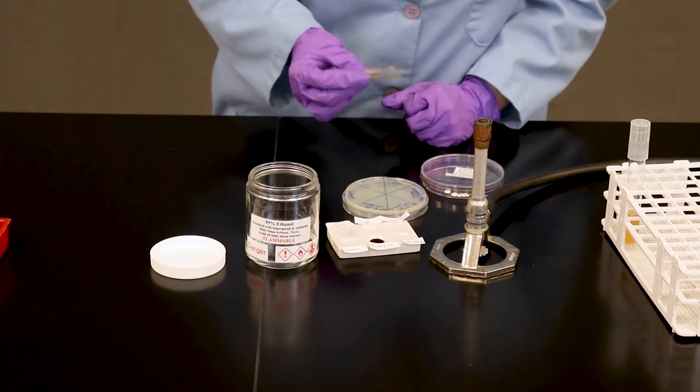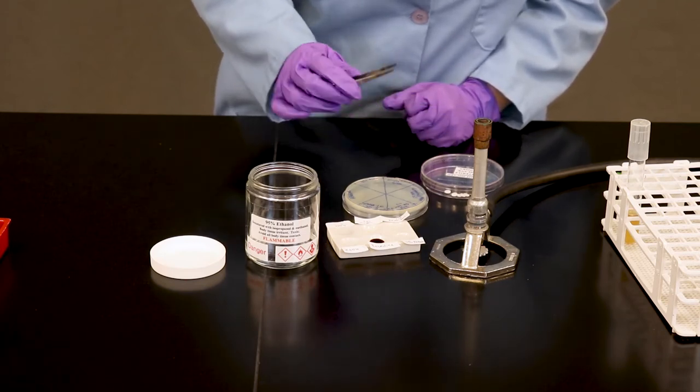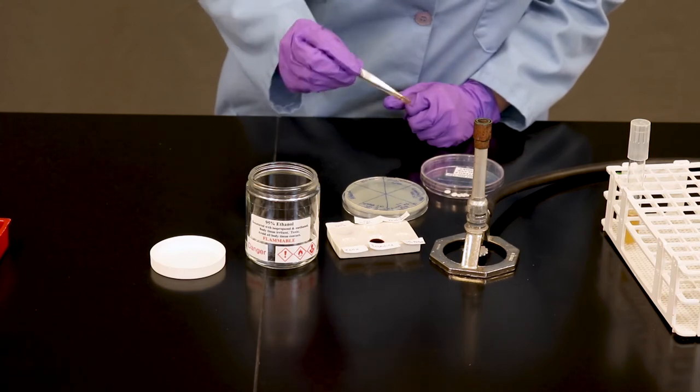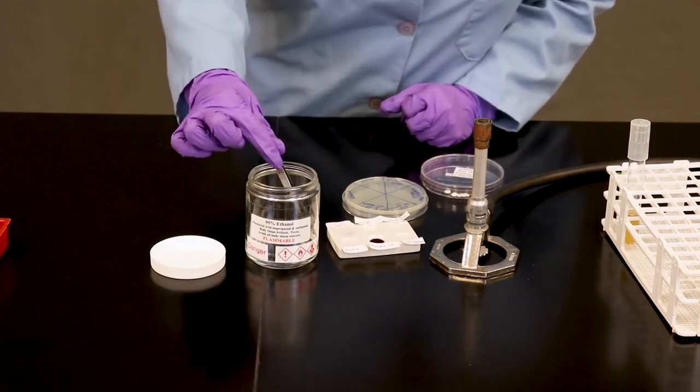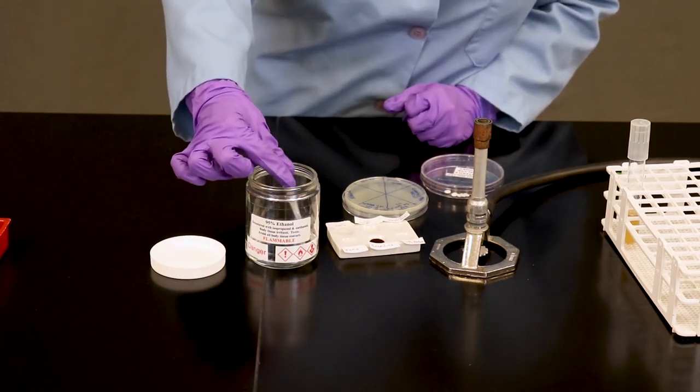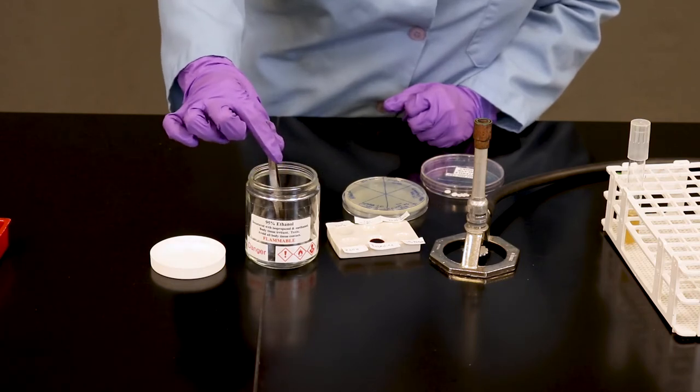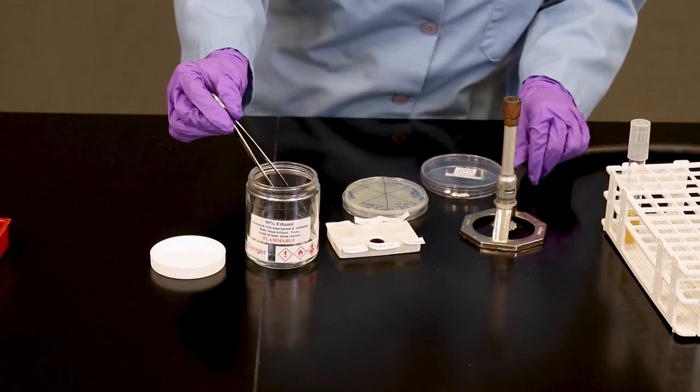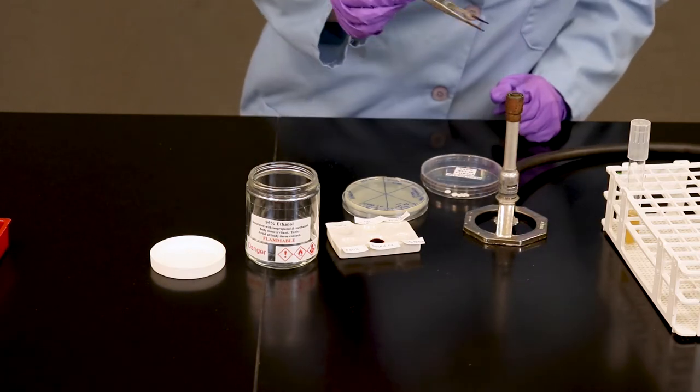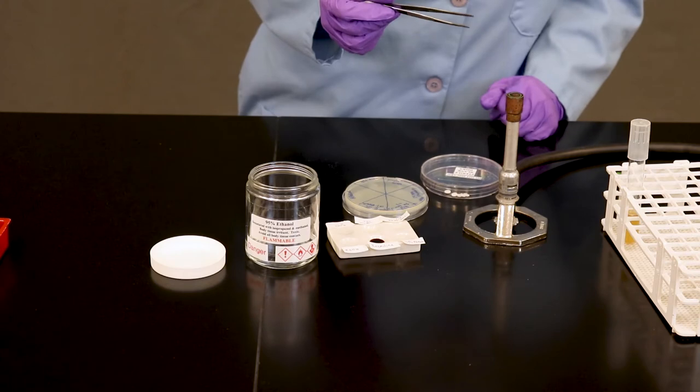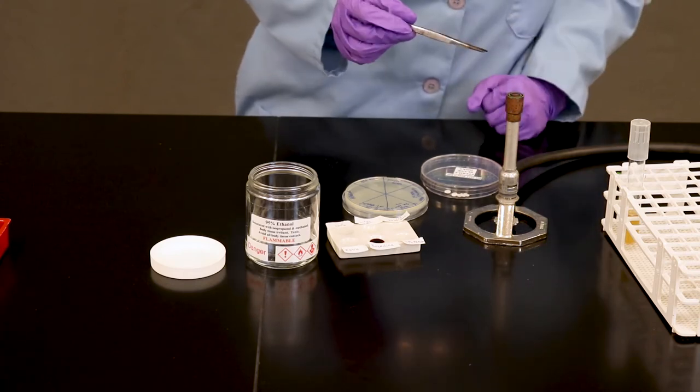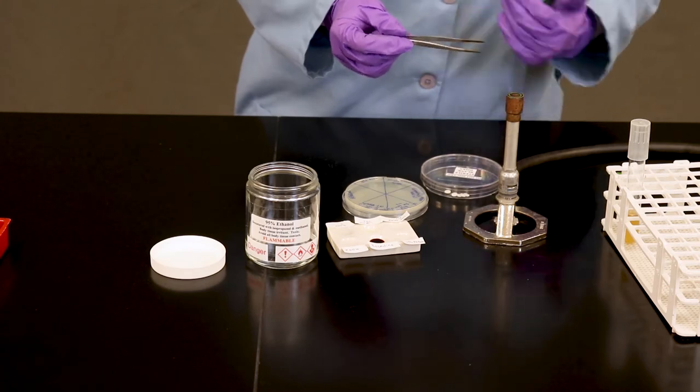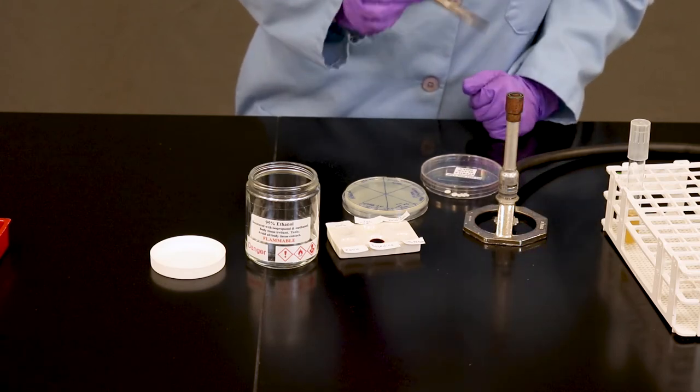In order to aseptically add my discs to my bacterial culture here, I'm going to flame sterilize my forceps. I do so by dipping the tip into the alcohol, shake off any excess, and I just want to very quickly pass it through my flame. You'll notice your forceps light on fire for a few seconds. You don't need to hold them here. Once the fire goes out, just let it cool for a few seconds, and that should be sufficient.